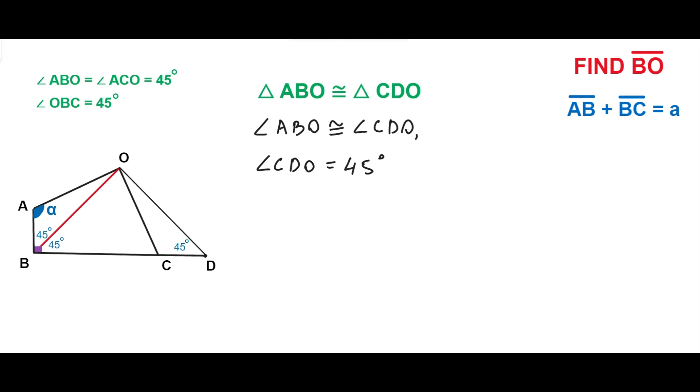Now let's consider the triangle OBD. In this triangle, the two angles are known. The angles OBD and ODB are 45 degrees. So the angle BOD is going to be 180 degrees minus 45 degrees minus 45 degrees, which equals 90 degrees.